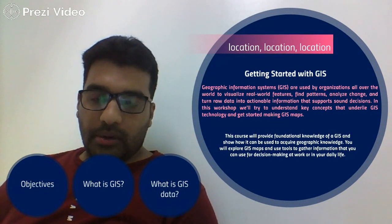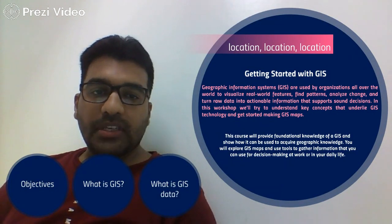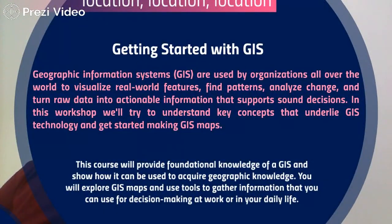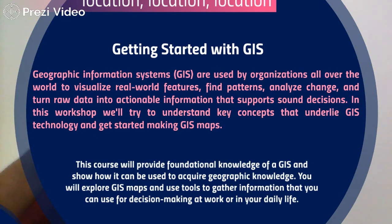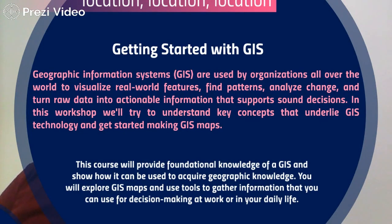Let us look at the fundamentals. GIS systems are used by organizations all over the world to visualize real-world features — for example, the number of buildings, their branches on the map, customers, students, and employees on the map. This helps organizations find patterns based on different attributes, analyze change, and turn raw data into actionable information to make better decisions.